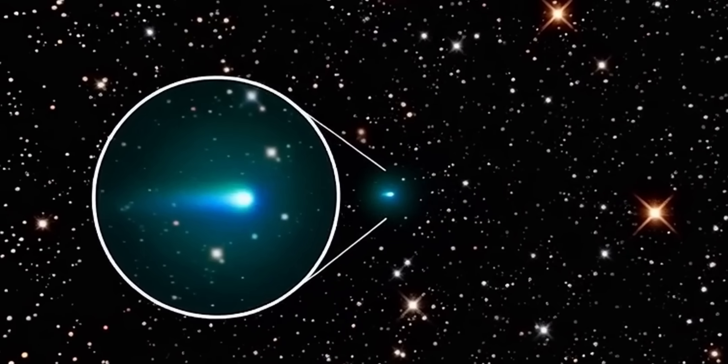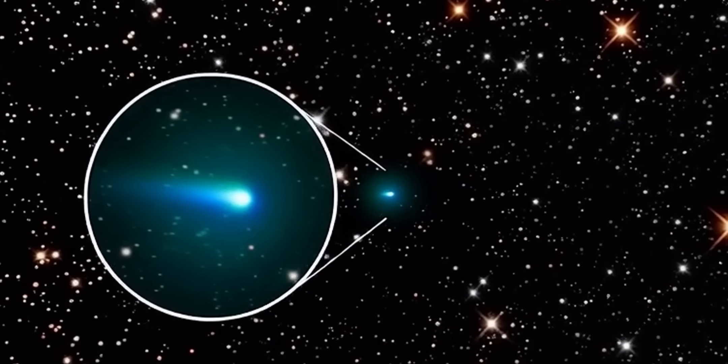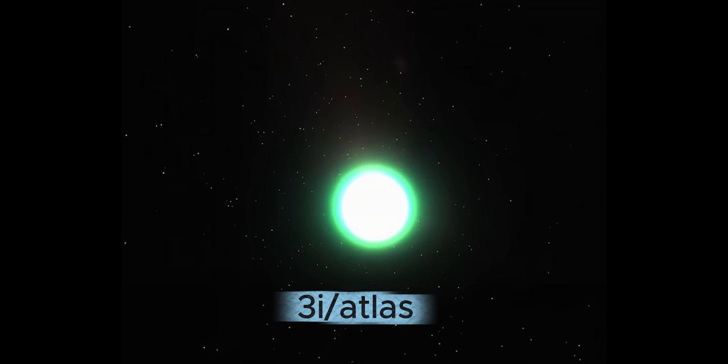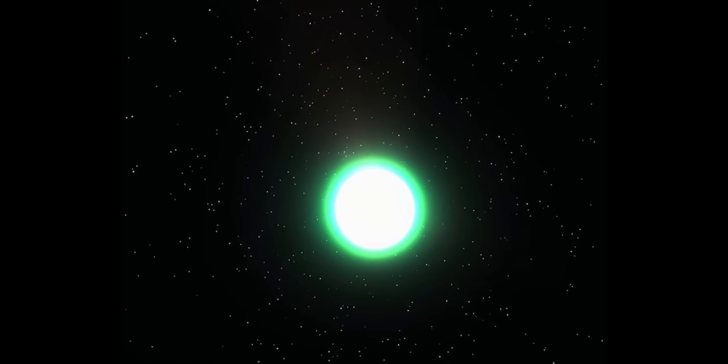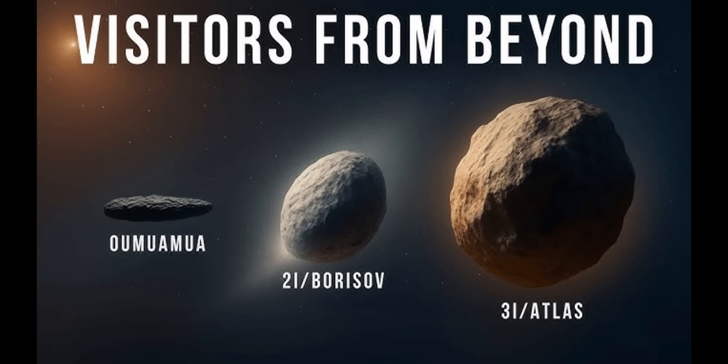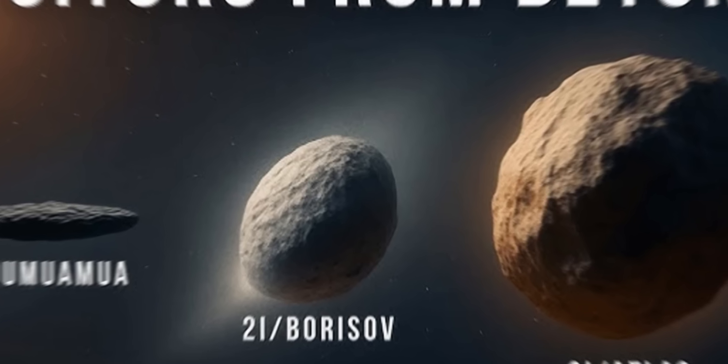Astronomers have recently detected something unusual moving through our solar system. It's called 3I Atlas, and it isn't like the comets or asteroids we normally track. This object comes from interstellar space, making it only the third confirmed interstellar visitor humanity has ever observed.